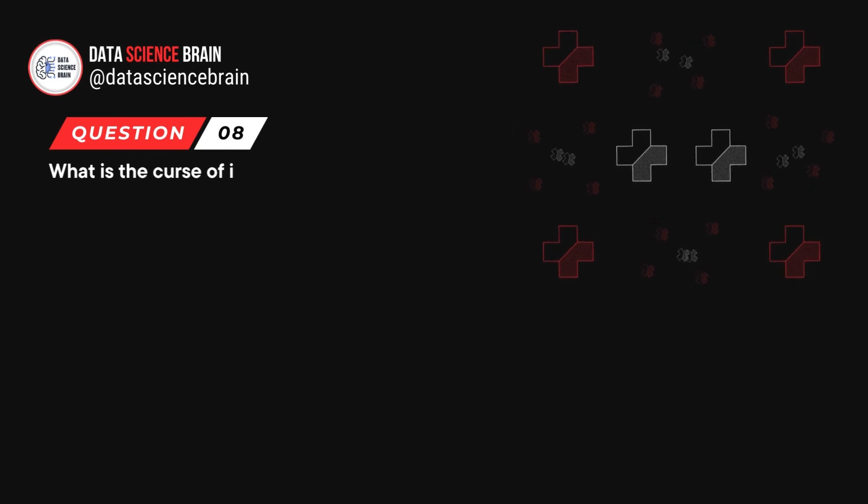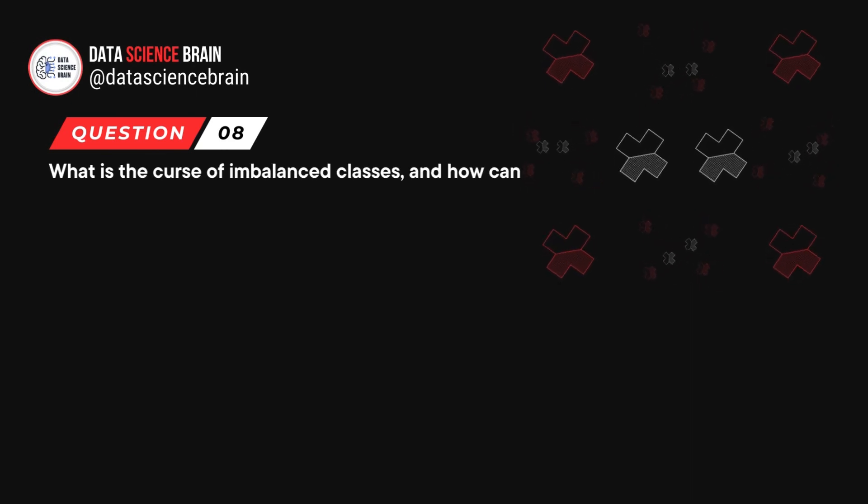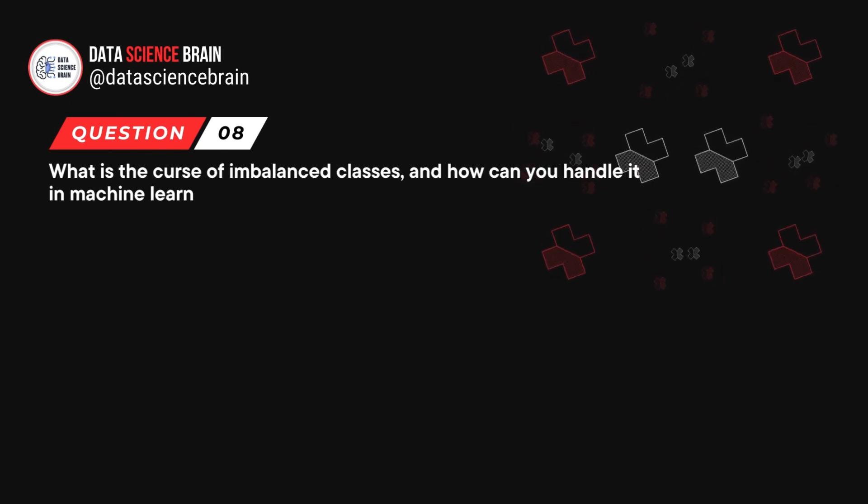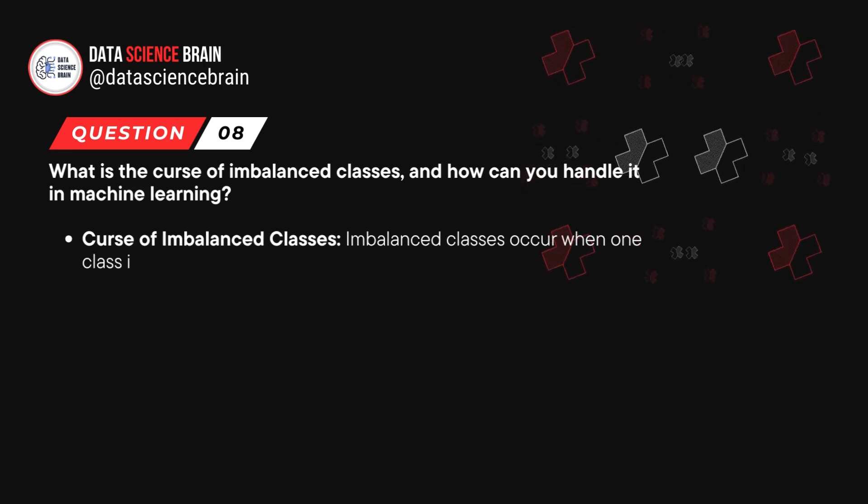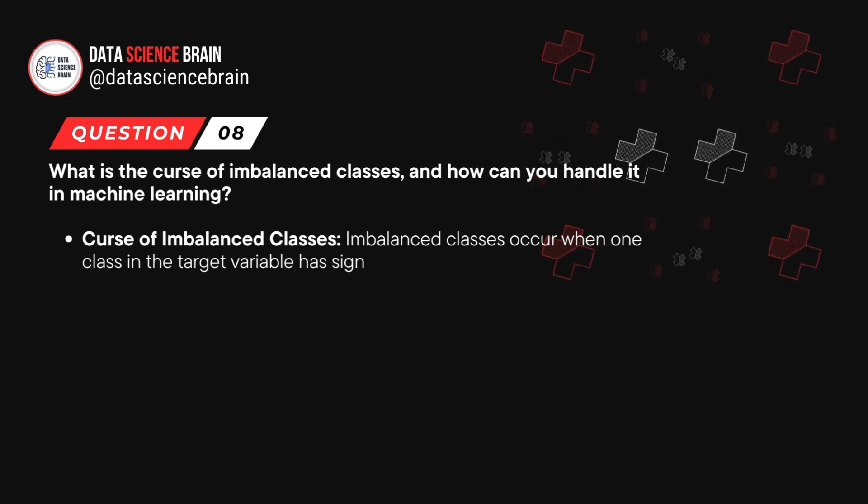Question number 8. What is the curse of imbalanced classes and how can you handle it in machine learning? Imbalanced classes occur when one class in the target variable has significantly fewer instances than the others, leading to biased models.